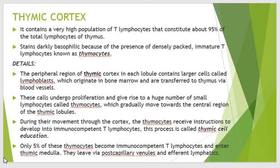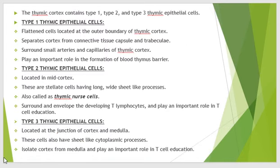During thymic cell education, only five percent of thymocytes become mature immunocompetent T lymphocytes. The rest undergo apoptosis and are engulfed by macrophages present in the cortex of the thymus. The five percent of mature immunocompetent T lymphocytes reach the medulla and leave via the post-capillary venules and the efferent lymphatics. The thymic cortex contains three types of thymic epithelial cells: type 1, type 2, and type 3.